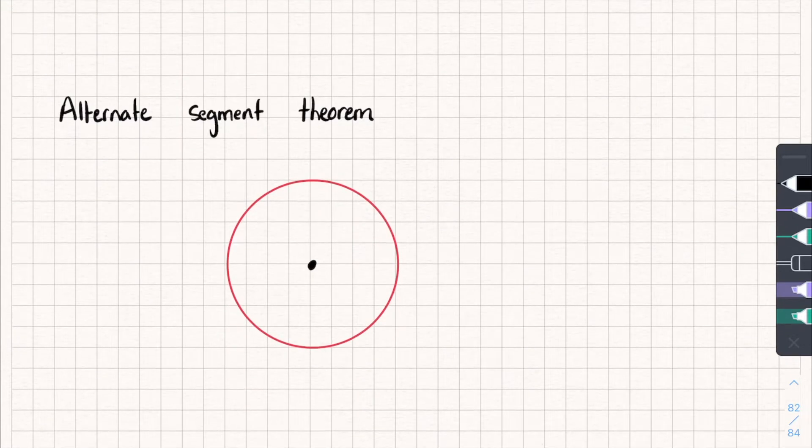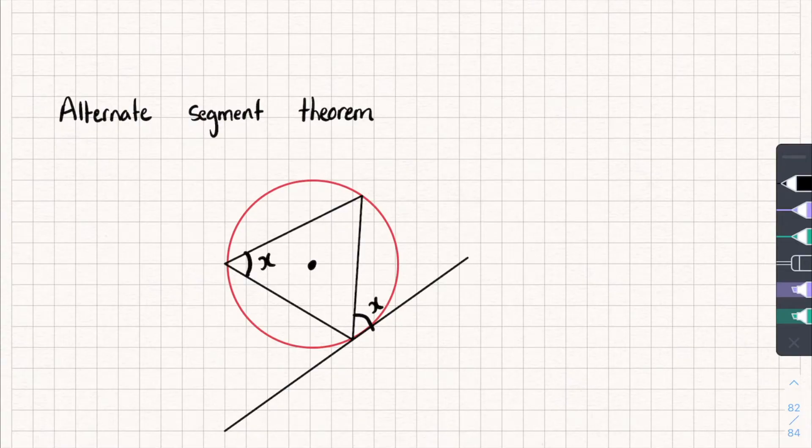The next one is the alternate segment theorem. So this says that the angle between a tangent and a chord, so let me draw on a tangent like this, and a chord that touches the tangent, so let me draw one of them on. So this angle here, x, well, that's going to be the same as the angle in the opposite segment. So what does that mean? Well, let's draw an angle in this other segment over here. There we go. This angle up there is going to be the exact same angle size.